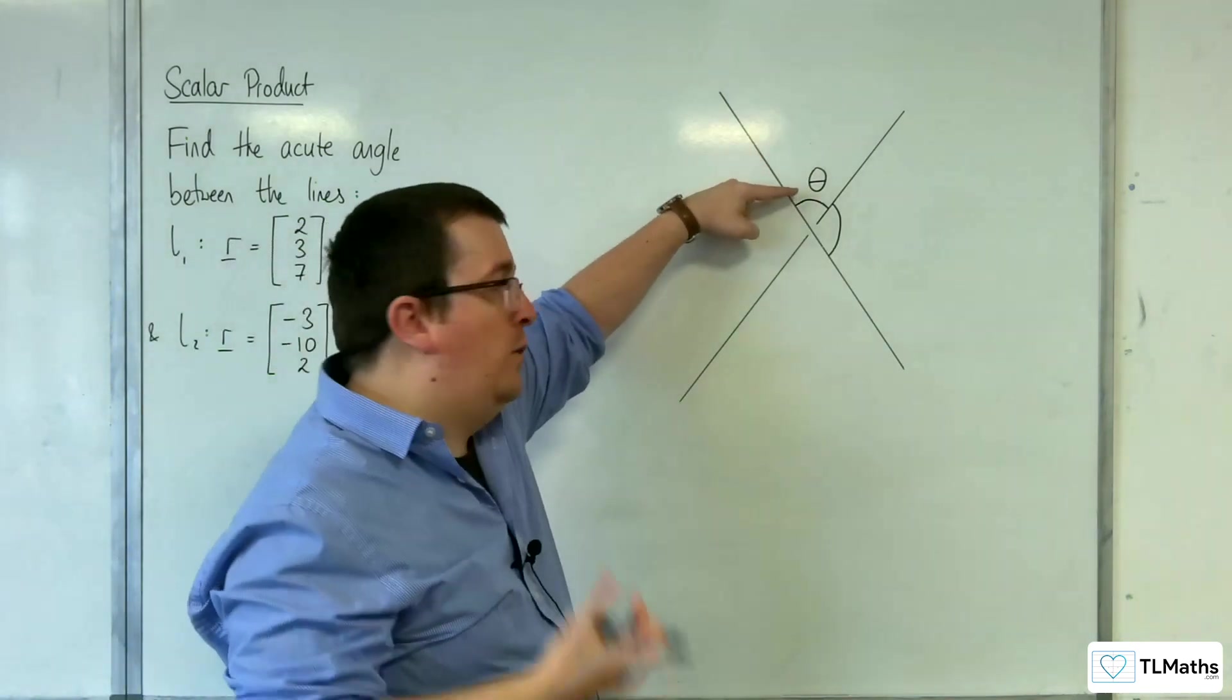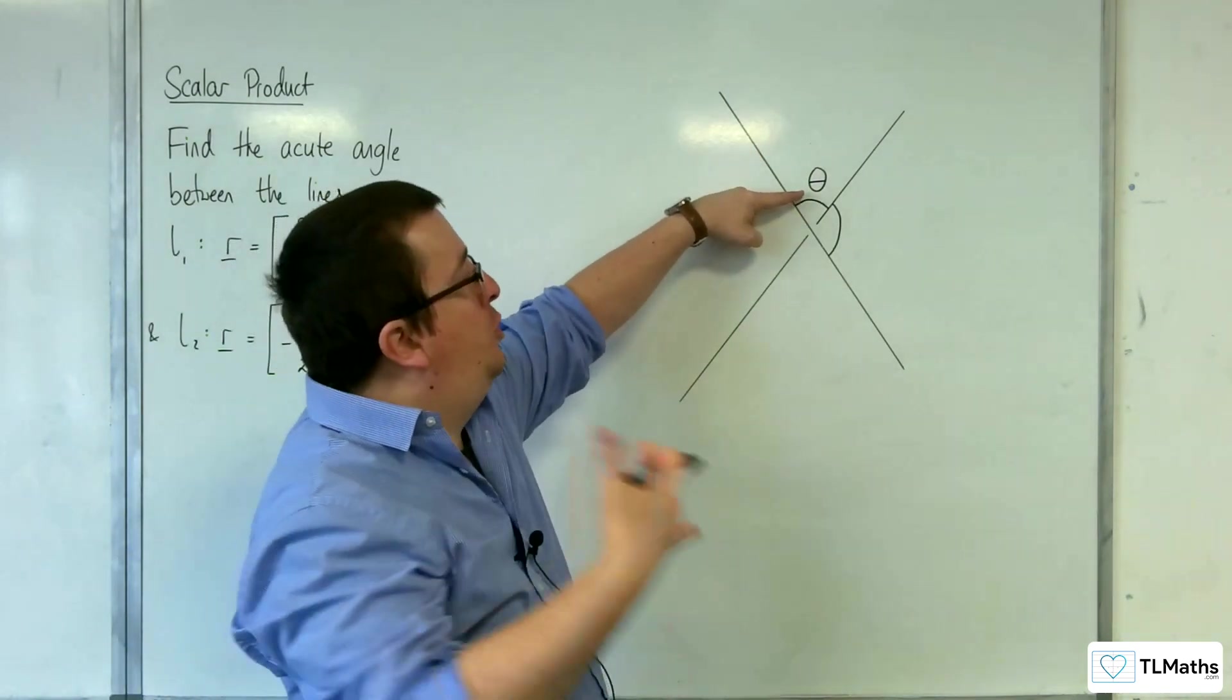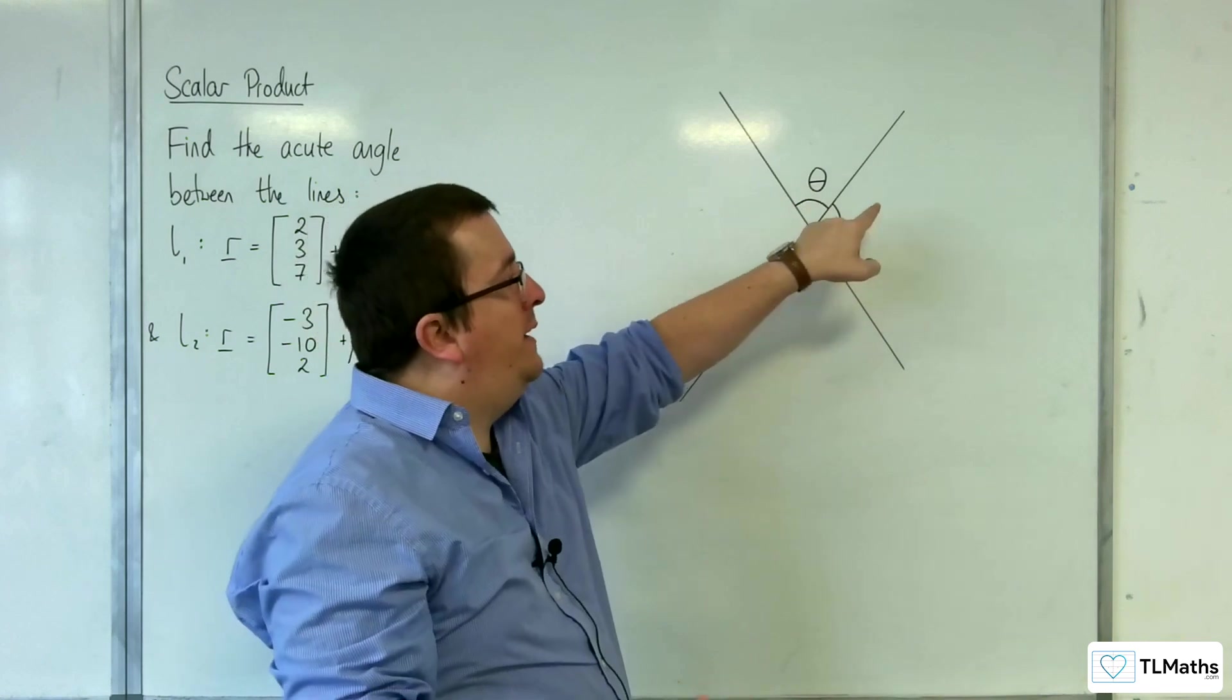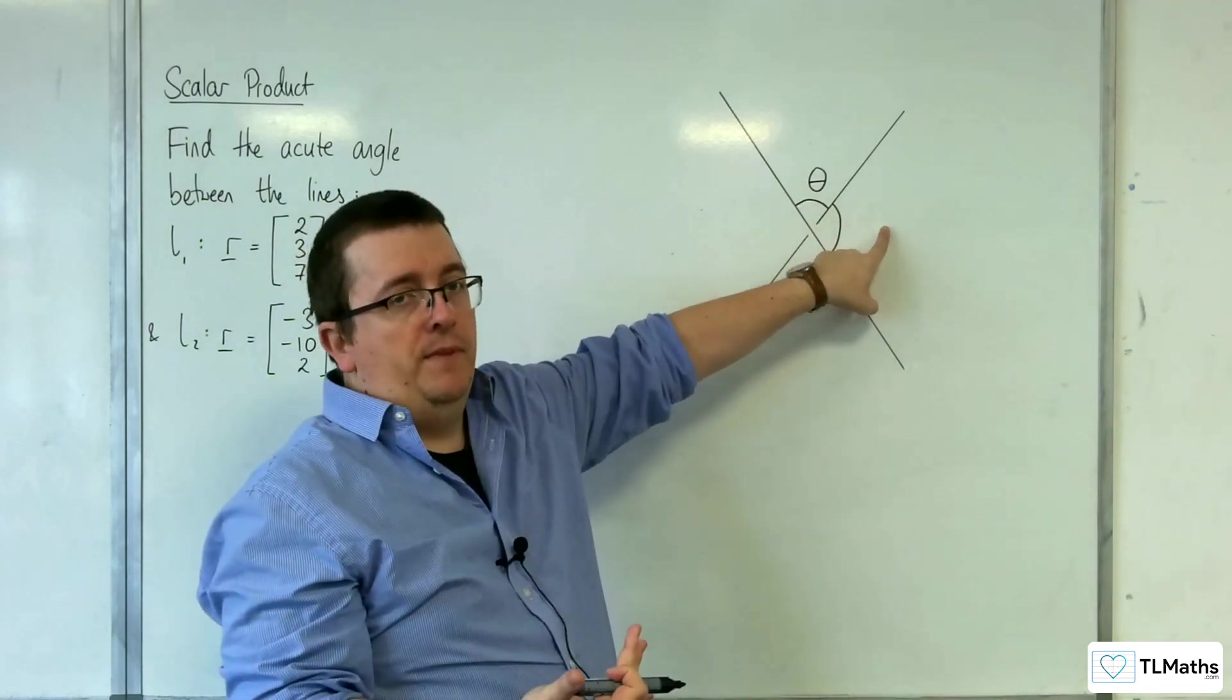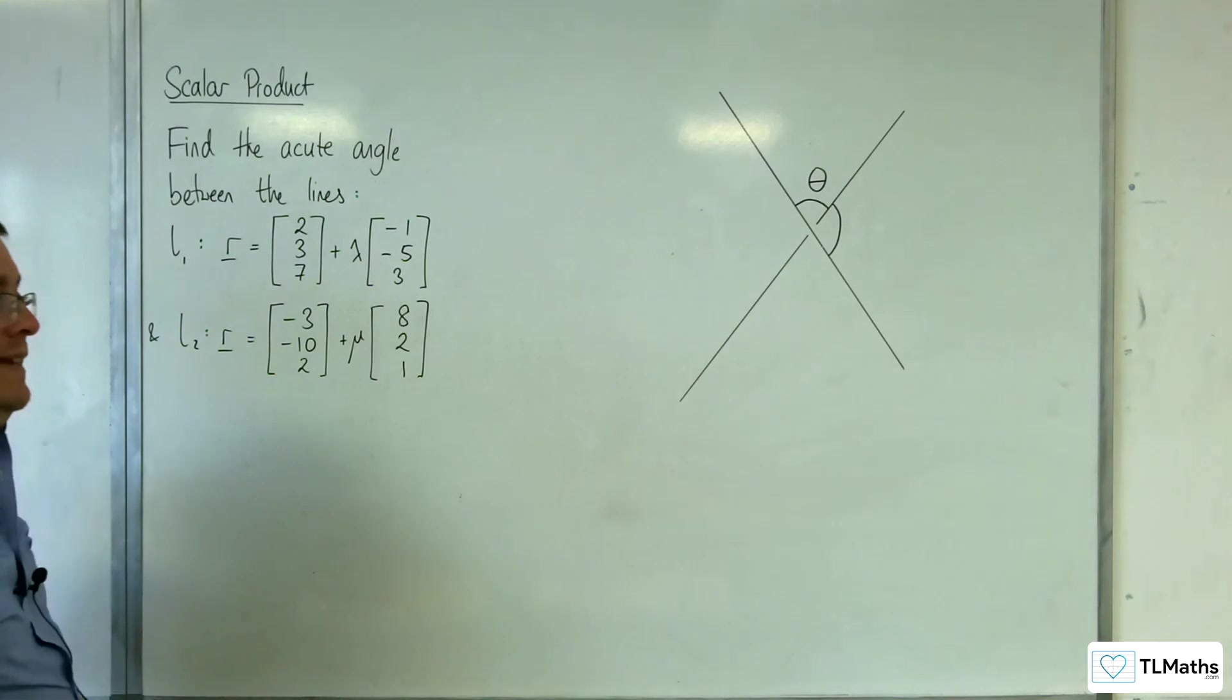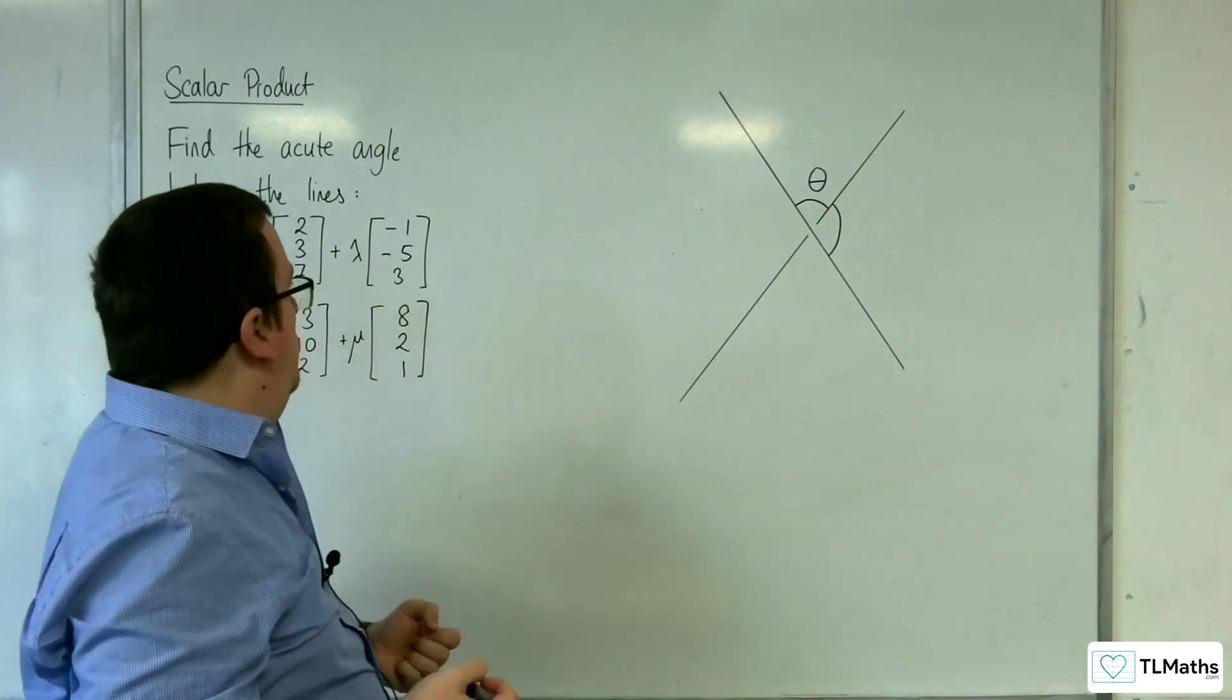Of course, this is the acute angle that I want to find, but I could end up through this process finding the obtuse angle, in which case I need to know to take that away from 180 to work out the angle that I want.